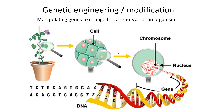In the last genetics lesson, we'll be looking at genetic engineering, also referred to as genetic modification. This is not really a practice that many breeders do, but big-time breeders with capital can use genetic modification to alter their livestock. Generally, this method is actually used in plant breeding. Basically, this method involves manipulating genes to change the phenotype of an organism.